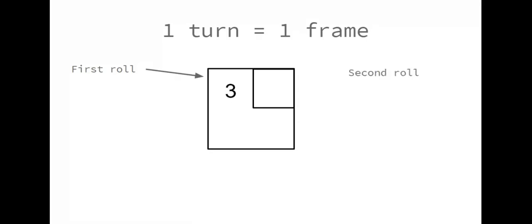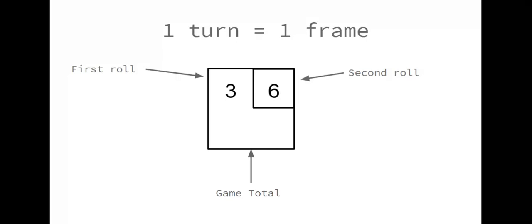Your second roll of the ball would go in the upper right hand corner. If I rolled the ball a second time and scored six pins, the six would go in the upper right hand corner. The game total goes in the bottom middle of the frame. If this was my first frame, you would just add three plus six — nine is my game total so far.